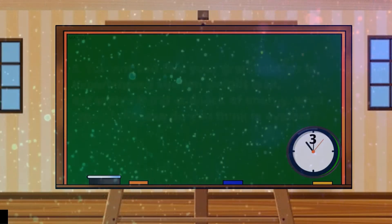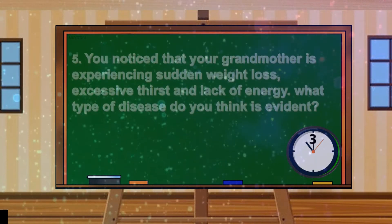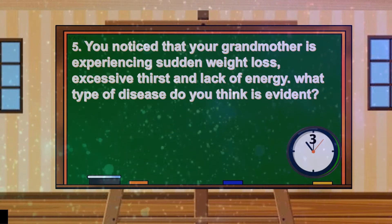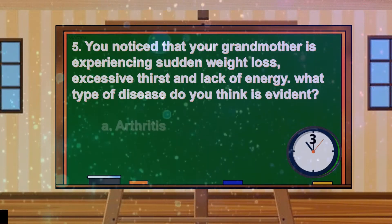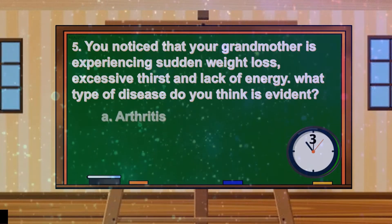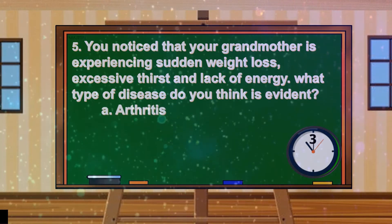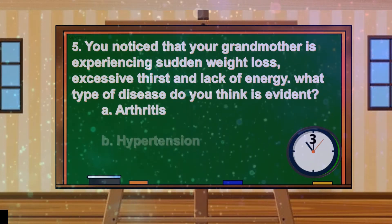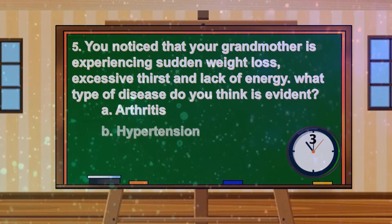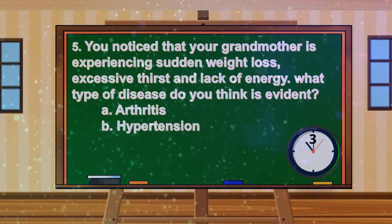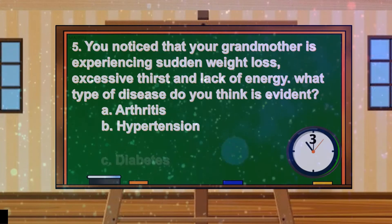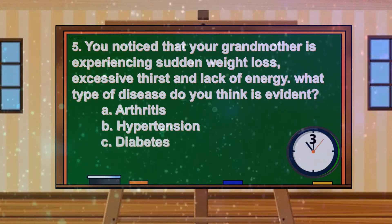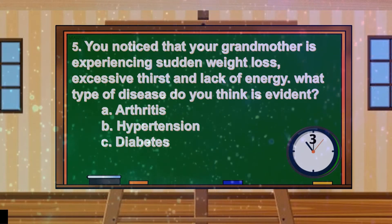Number 5. You notice that your grandmother is experiencing sudden weight loss, excessive thirst, and lack of energy. What type of disease do you think is evident? A. Arthritis. B. Hypertension. C. Diabetes. D. Renal failure.